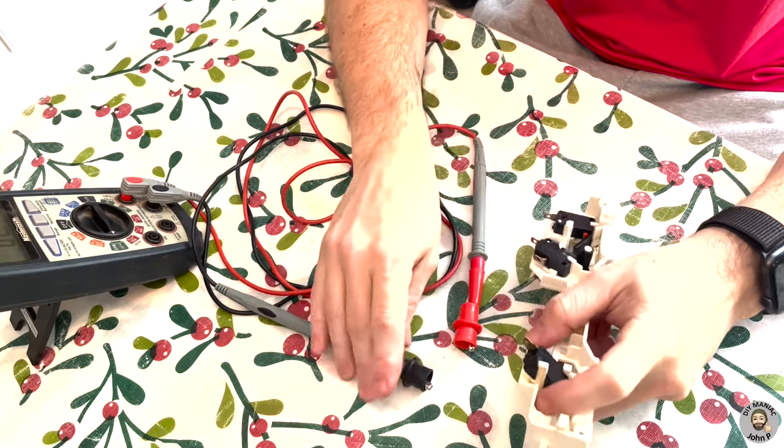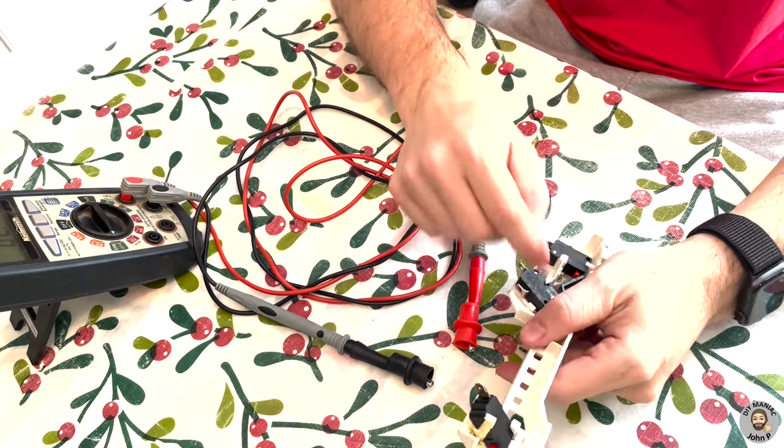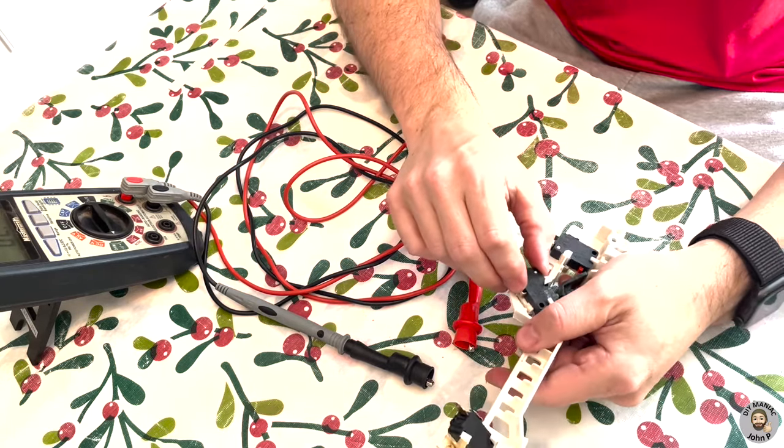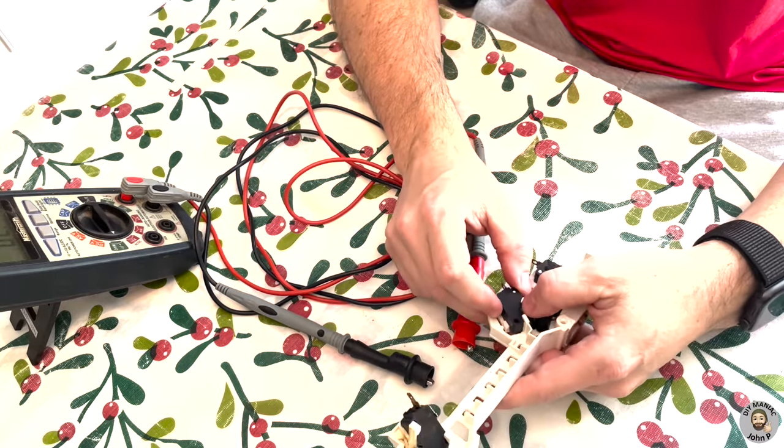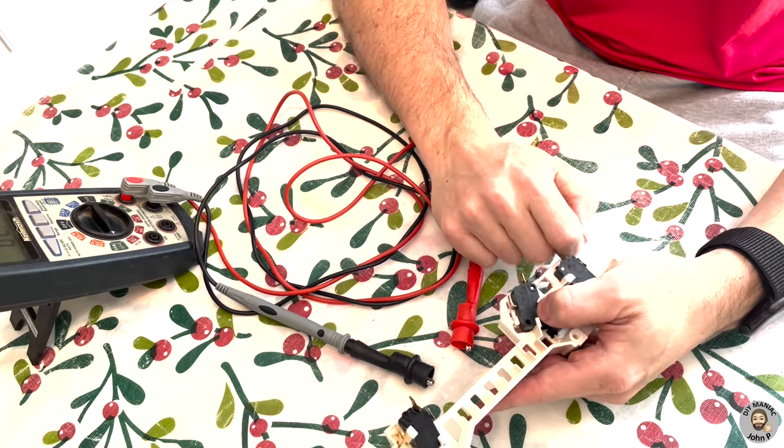So you're going to do that to each of the switches and test them to find out which one is faulty. Once we isolate the faulty switch, definitely we're going to go ahead and replace it. Or if you're like me and it's over the holidays and you can't find anyone open to get a replacement switch, I'm going to show you how to take this switch apart and fix it yourself.